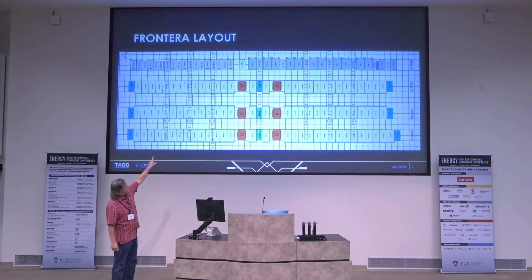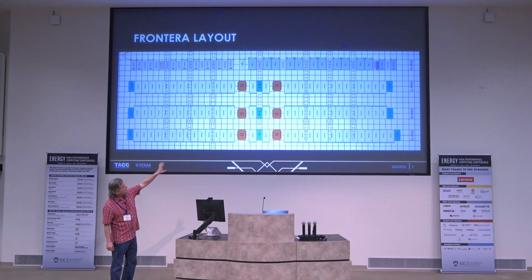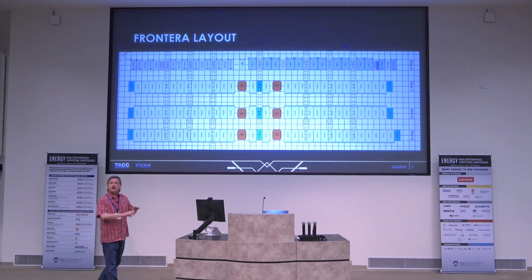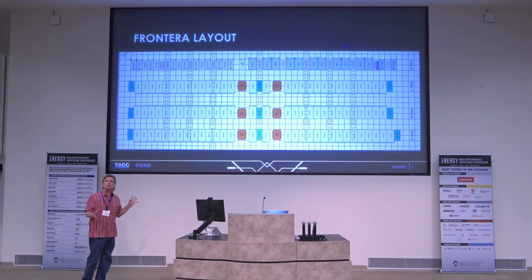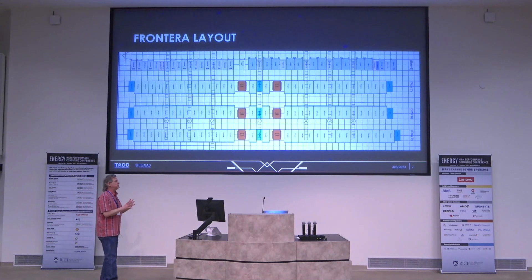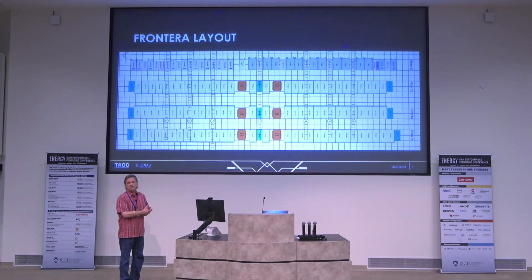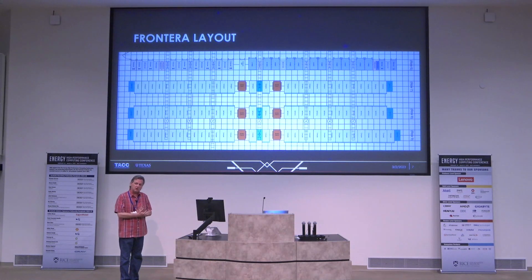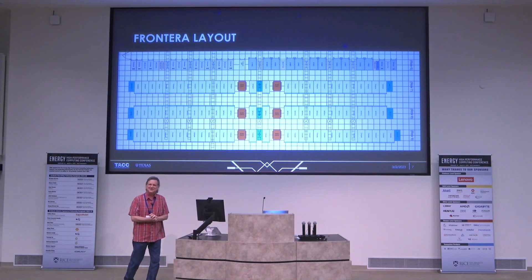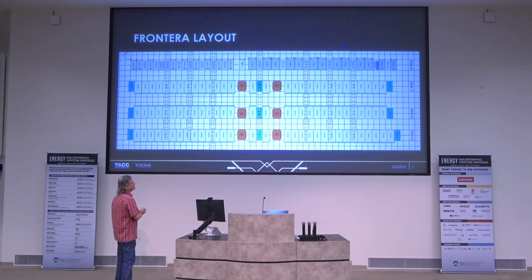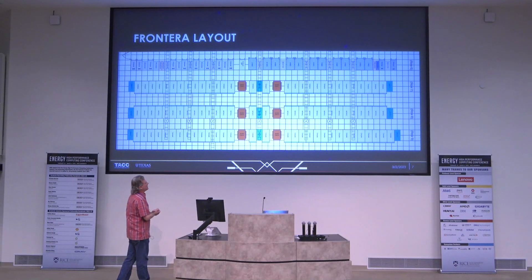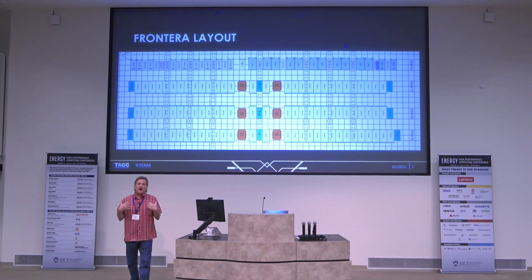The storage is located at the top row and we have UPS in the data center that feeds just the storage and switches — we do not keep the compute hardware on UPS, as that's way too much power. Frontera at full bore during LINPACK runs about five and a half megawatts of total power. Interestingly, the core director-class switches are also liquid-cooled, so liquid cooling is coming for networking hardware as well.